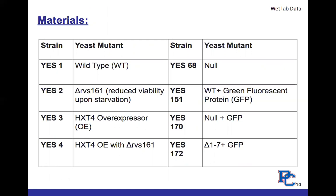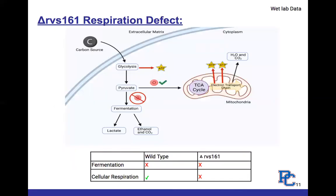Diving into the wet lab research: you're probably going to hear me say 'YES' followed by a number — YES stands for Yeast Evelyn Swain, because all experiments were done using yeast strains she provided. In this table I've indicated all the strains used in my experiments. The wild type was used as a positive control because it has no mutations and represents what you'd find outside the lab, while the null strain was used as a negative control because all the transporters were knocked out.